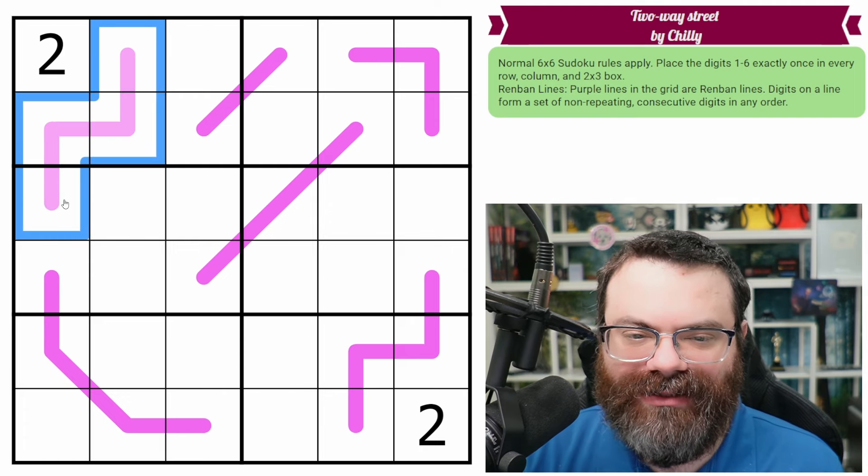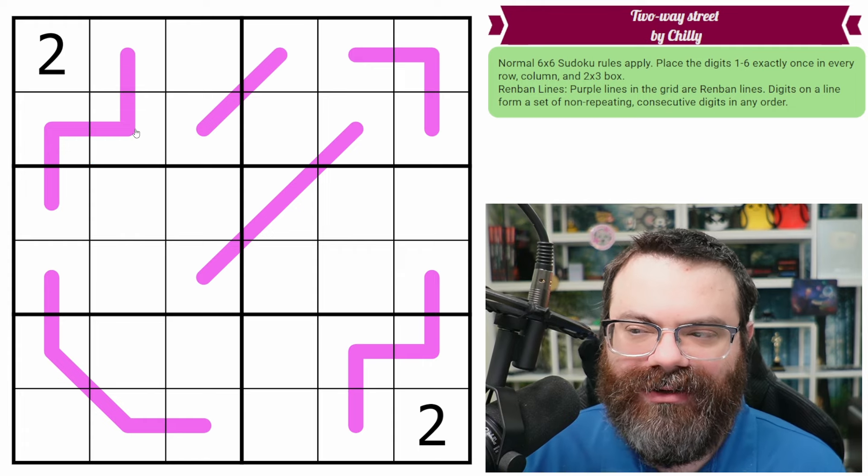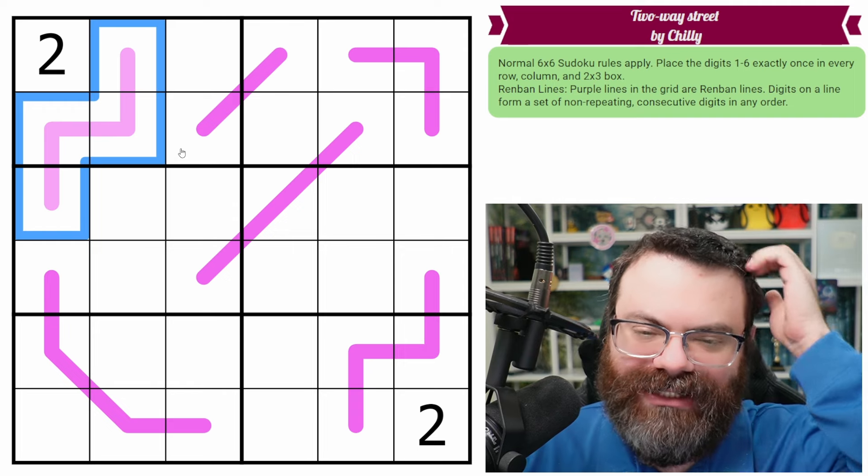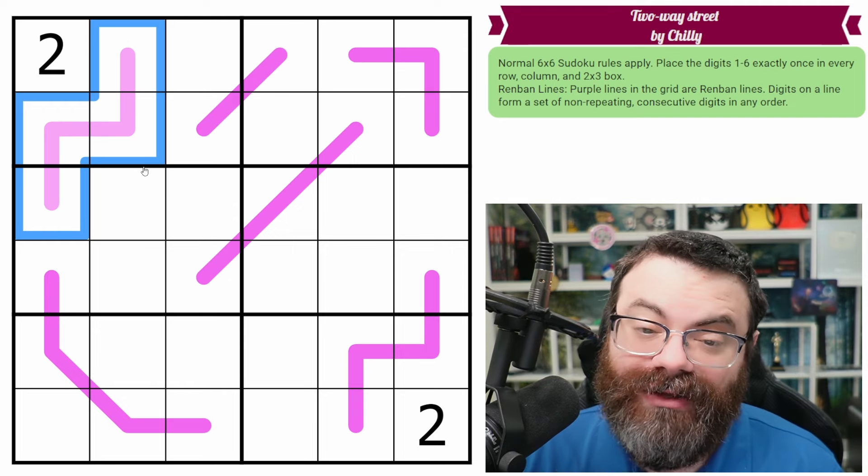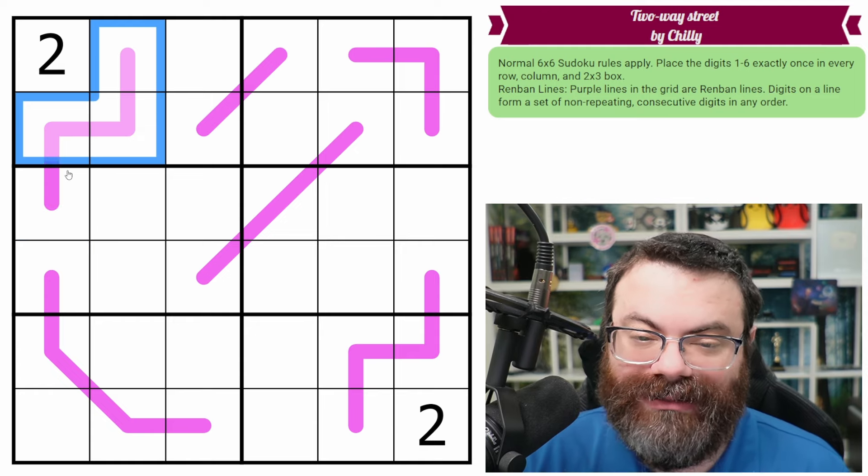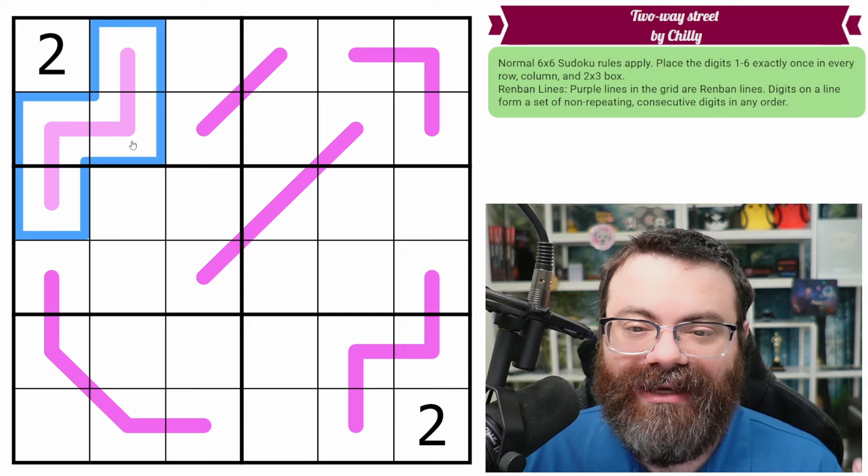We also have Renban lines in the grid. Those are these thick lines here. So for Renban lines, we need to put a consecutive set of digits on the lines, like 1, 2, 3, 4, or 2, 3, 4, 5, or 3, 4, 5, 6. And it's the length of the line, obviously. You can't repeat digits on the line. They have to be consecutive, but they can be in any order.